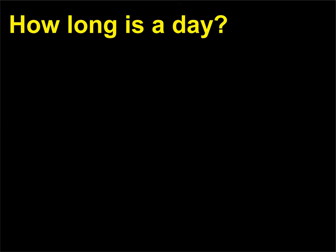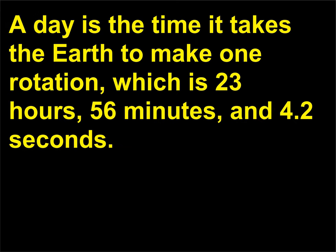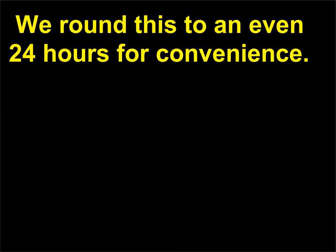How long is a day? A day is the time it takes the Earth to make one rotation, which is 23 hours, 56 minutes, and 4.2 seconds. We round this to an even 24 hours for convenience.